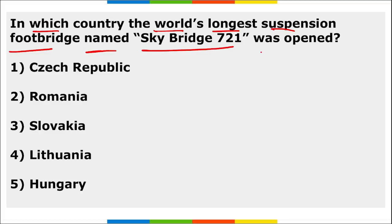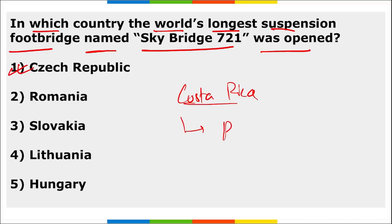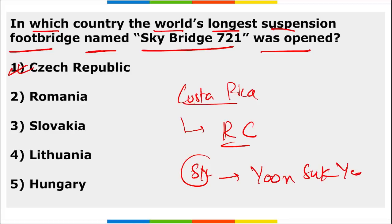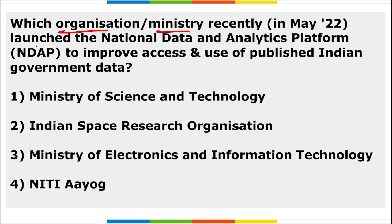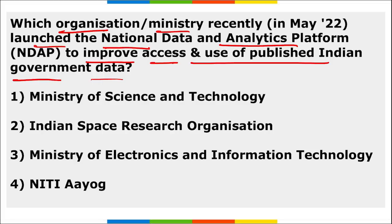The world's longest suspension footbridge, named Skybridge 721, was opened in Czech Republic. Rodriguez Chaves was sworn in as President of Costa Rica. Yoon Suk-yeol was appointed as President of South Korea. Saudi Aramco became the world's most valuable company, surpassing Apple. NITI Aayog launched the National Data and Analytics Platform to improve access and use of published Indian government data.